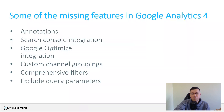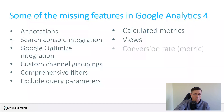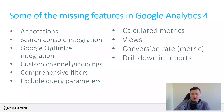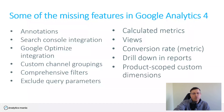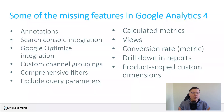You cannot easily exclude query parameters from the page URL, because that was simple in GA3. In GA4 you would need to do some magic in Google Tag Manager. Then there are no calculated metrics, no views, no conversion rate as a metric, you cannot drill down in reports, and you don't have product-scoped custom dimensions. So if any of these are a major deal breaker for you, then you should not migrate fully to GA4 only right now.